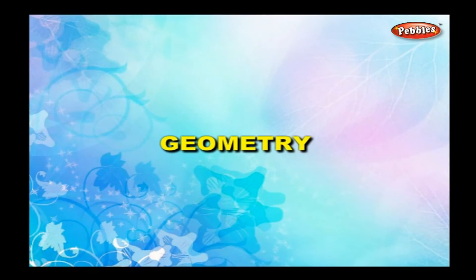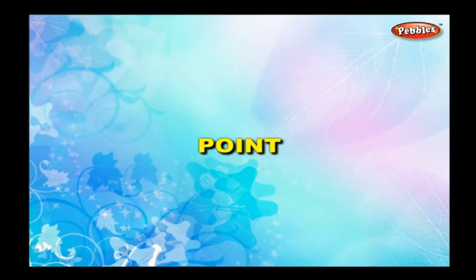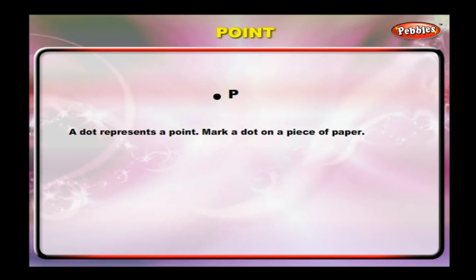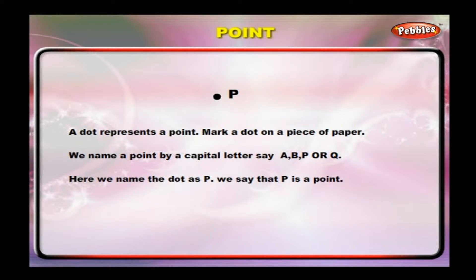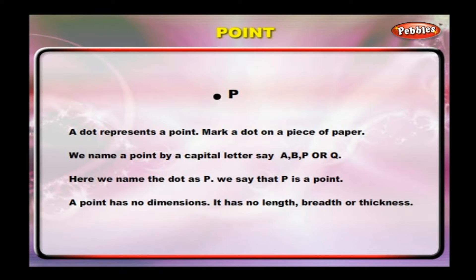Geometry. Point. A dot represents a point. Mark a dot on a piece of paper. We name a point by a capital letter, say A, B, P or Q. Here we name the dot as P. We say that P is a point. A point has no dimensions. It has no length, no breadth or thickness.